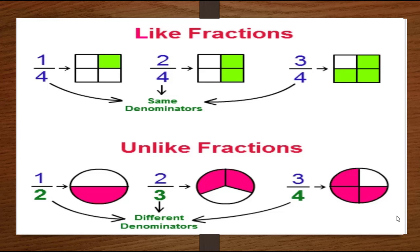Now look at these squares. There are three squares, each divided into four equal parts. In the first square there is one colored part, so the fraction is 1 over 4. In the second square two parts are colored, so the fraction is 2 over 4. In the third square three parts are colored, so the fraction is 3 over 4. In all the fractions, the denominator is the same.